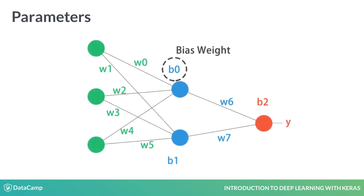Each connection from one neuron to another has an associated weight W. Each neuron, except those in the input layer which just hold the input values, also has an extra weight we call the bias weight B.